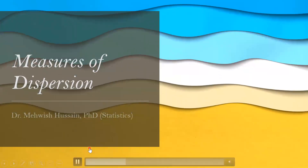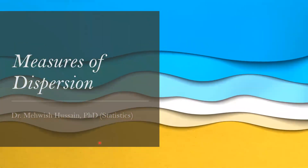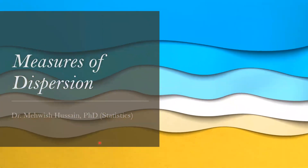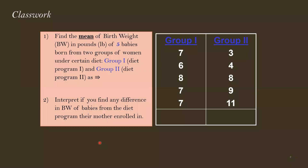Today we are going to study the measure of dispersion, which is a kind of descriptive measure. It comes after we work on the measure of central tendency, which includes mean, median, and mode — the basic analyses for descriptive measures.